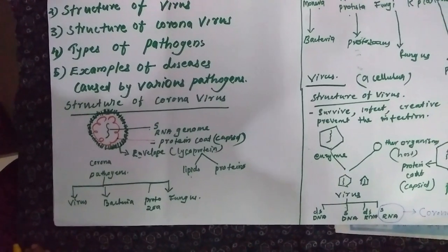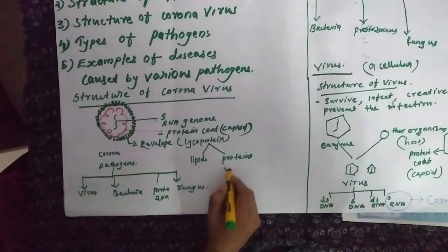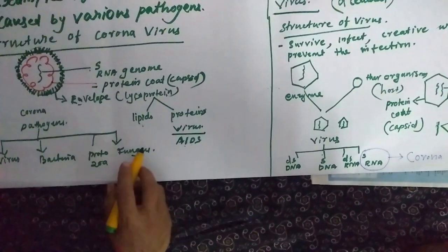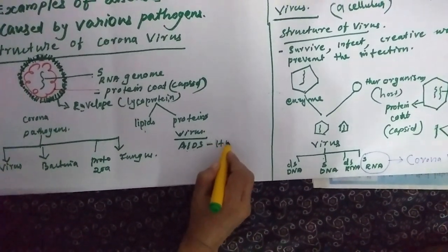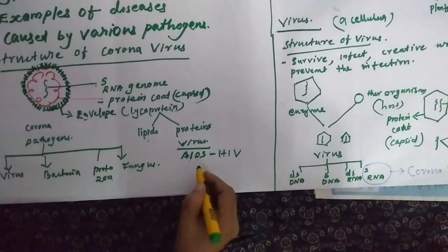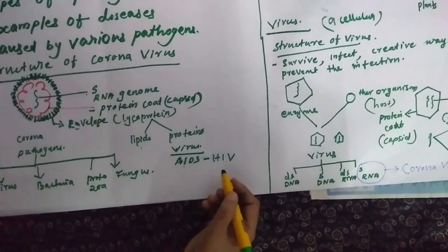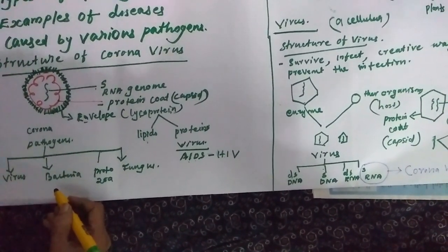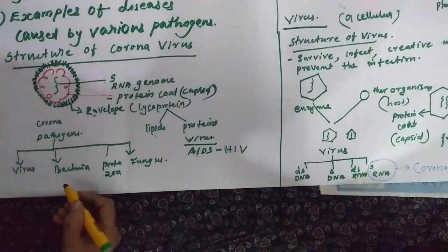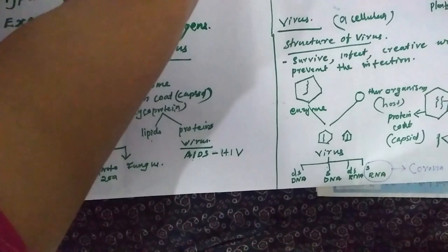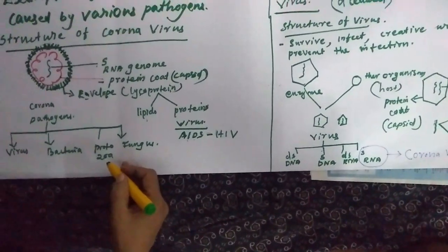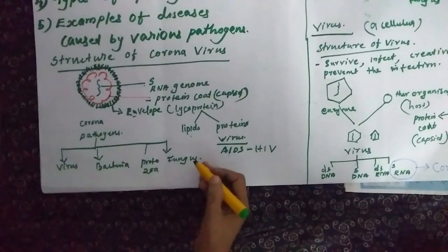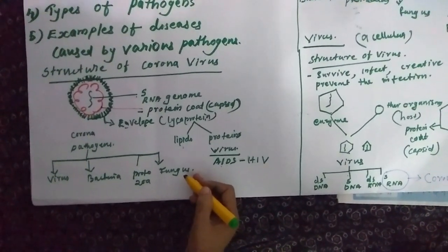Can you name one viral disease? AIDS — Acquired Immunodeficiency Syndrome — is caused by HIV, the Human Immunodeficiency Virus. Others include chickenpox, SARS, etc. Bacterial diseases include cholera and TB (tuberculosis). Diseases caused by protozoa include malaria, where the malarial parasite is the causative organism. Fungal diseases include ringworm, dandruff, etc.